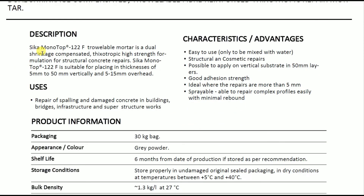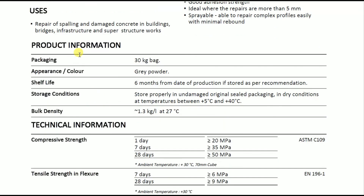The next material is Sika Monotop 122F, produced by Sika Company. It is described as a trowelable mortar — a dual shrinkage-compensated thixotropic high-strength formulation for structural concrete repairs. Sika Monotop 122F is suitable for placing in thickness of 5 to 50 mm vertically and 5 to 15 mm overhead. Its usages include repair of spalling and damaged concrete in buildings, bridges, and infrastructure walls. Advantages include: easy to use, mixed only with water, structural and cosmetic repairs possible, applicable on vertical substrates in 50 mm layers, good adhesion strength, sprayable, and able to repair complex profiles with minimum rebound.